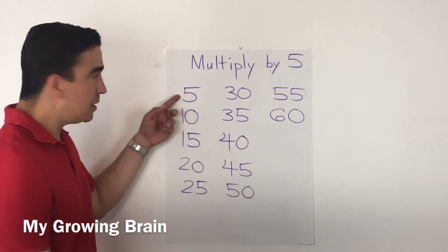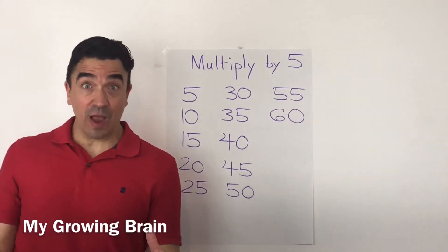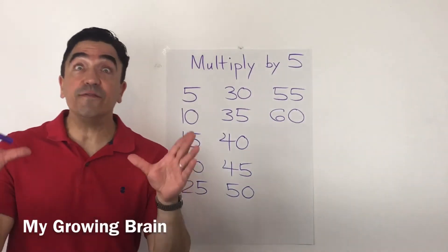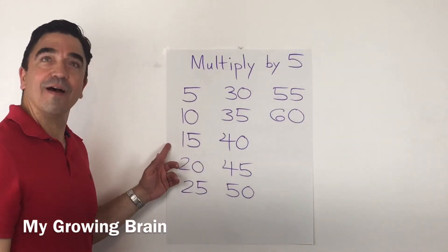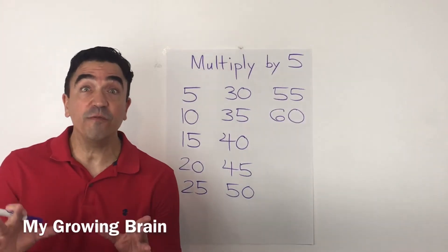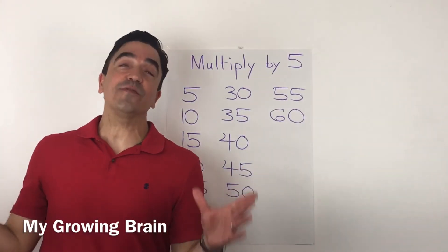5 times 1 is 5. 5 times 2 is 10. 5 times 3 is 15. 5 times 4 is 20. 5 times 5 is 25.